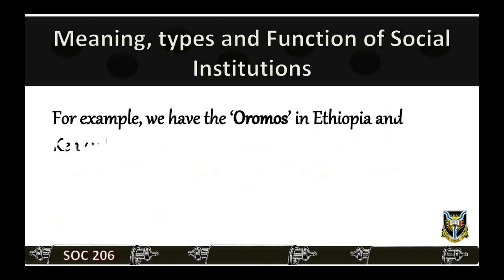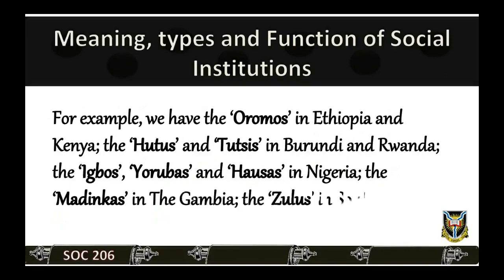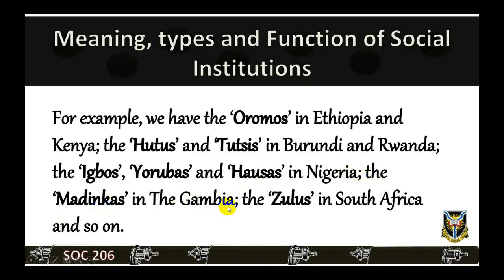For example, we have the Oromos in Ethiopia and Kenya, the Hutus and Tutsis in Burundi and Rwanda, the Igbos, Yorubas, and Hausas in Nigeria, the Madinkas in the Gambia, the Zulus in South Africa, and so on.